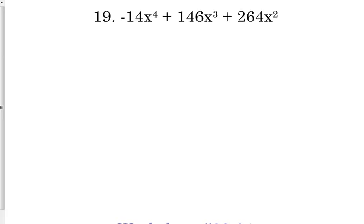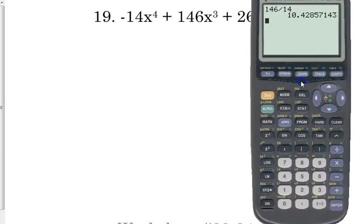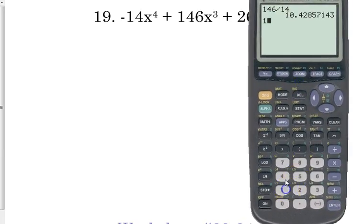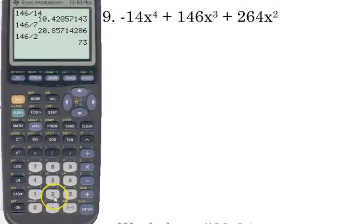We're going to at least take out two because all those numbers are even. But let's see if 14 is the greatest common factor. So let's just go through and divide 146 and see if it's evenly divisible by 14. It is not. So then I'm going to try the next biggest factor of 14, which is 7. That is not evenly divisible. But it is even, so it is divisible by 2, as is 264.